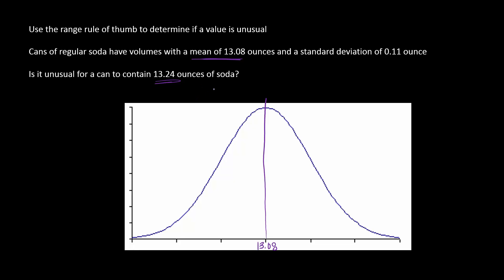Basically what I'm trying to do is see if I get a can that has 13.24 ounces of soda, is that unusual? Well, one standard deviation would be plus 0.11, so this would be one standard deviation. I would take the 13.08 and add the 0.11.